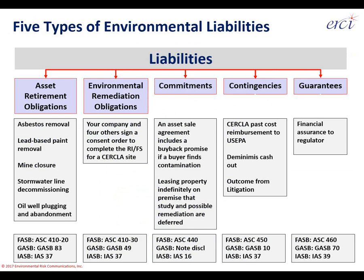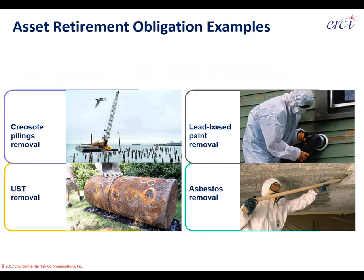To give graphic illustrations of different types of environmental liabilities: an asset retirement obligation is that end-of-lifecycle cost from normal operation. Creosote pylons and docks wear out in seawater. Underground storage tanks rust out and need to be pulled from the ground periodically. Lead-based paint and asbestos need special removal when a building is demolished. On the left side of the screen is an airport decommission — former Meigs Field in downtown Chicago — showing the transition from an operating runway to a new land use.